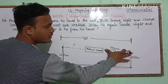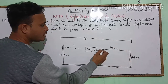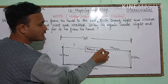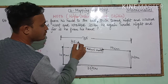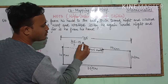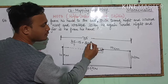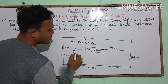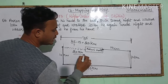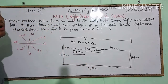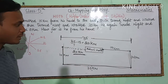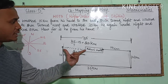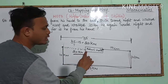From the 35 km total, 15 km is already accounted for — that's the distance Ankur's house covers. So if we subtract 15 from 35, we get 20 kilometers. That distance — 20 kilometers — is your answer. The distance between Ankur's house and his last point is 20 kilometers.